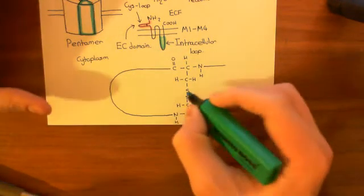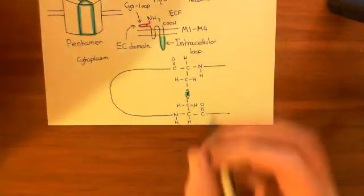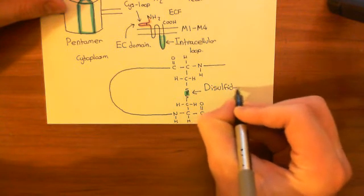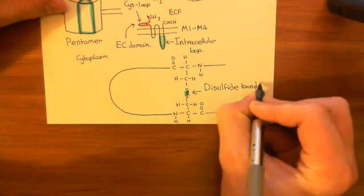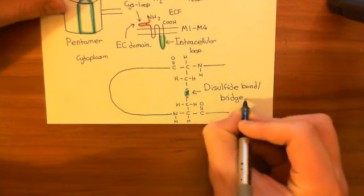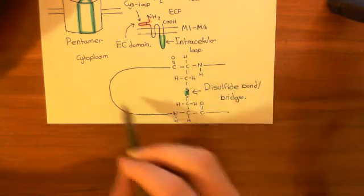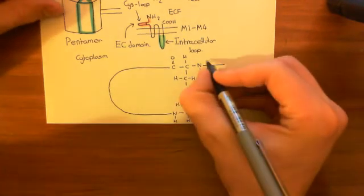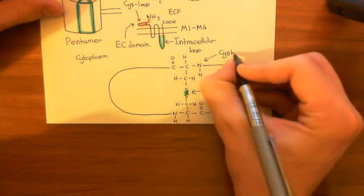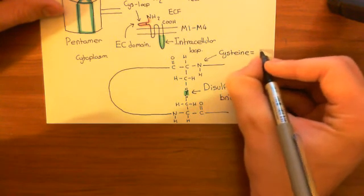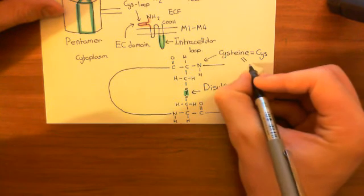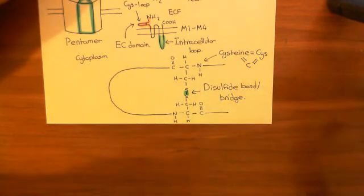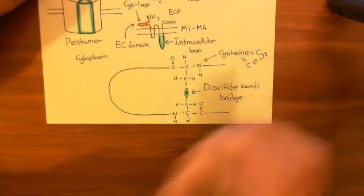The important thing, which I'll highlight in turquoise, is this bond between these two sulfur atoms — this is what's known as a disulfide bond, or disulfide bridge. Both names are commonly used. You've got this loop in the polypeptide structure held together by this disulfide bond or bridge. This is what's called a cys-loop. The single-letter amino acid code for cysteine is C, and the three-letter code is CYS. This is why these things are called cys-loops — they are loops held together by cysteines.